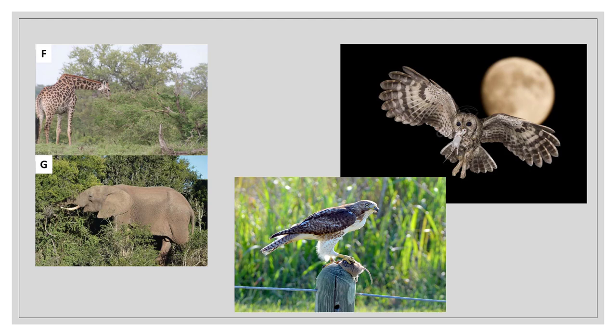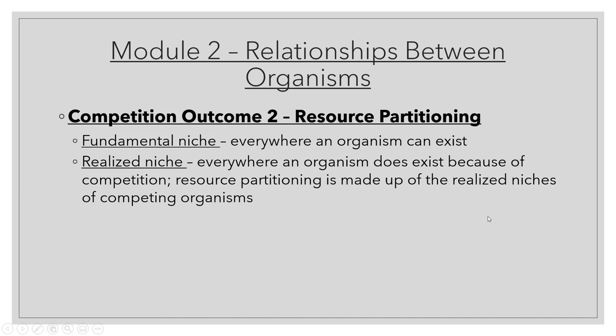Here are some other examples of resource partitioning. On the left, a giraffe eats vegetation really high while the elephant eats the lower vegetation. On the right, a hawk and an owl hunt the same kind of mice, but the hawk hunts in the daytime and the owl hunts at night. So resource partitioning can even just mean different times, as opposed to subdividing the same resource simultaneously.